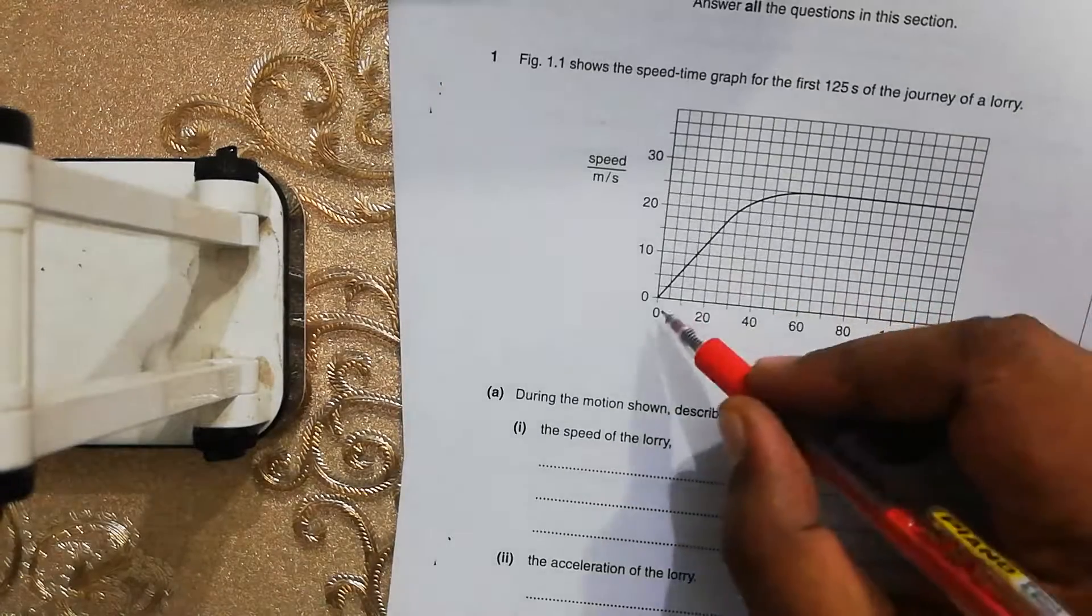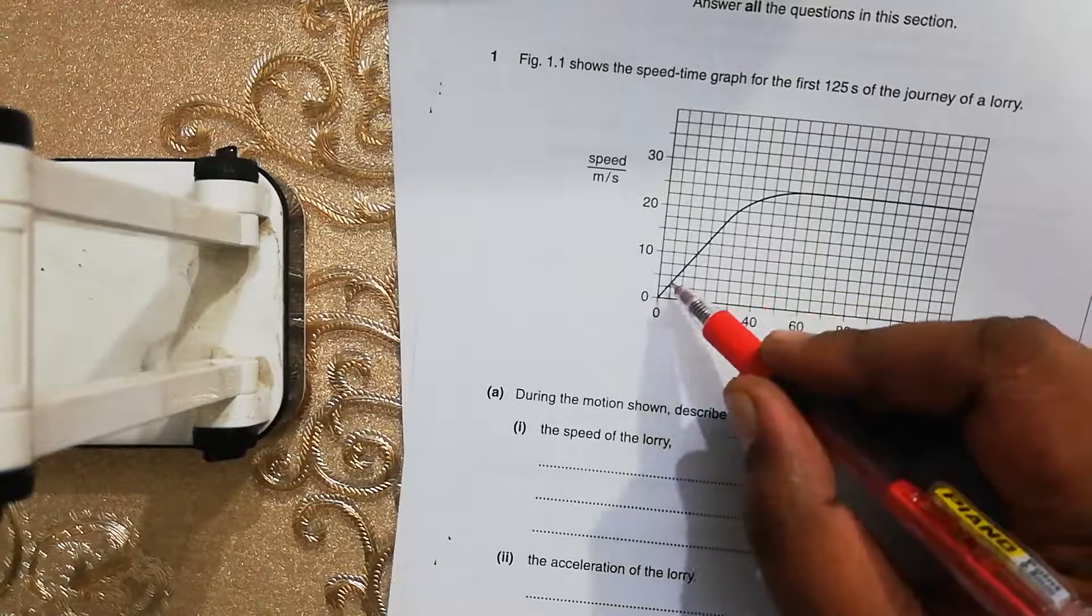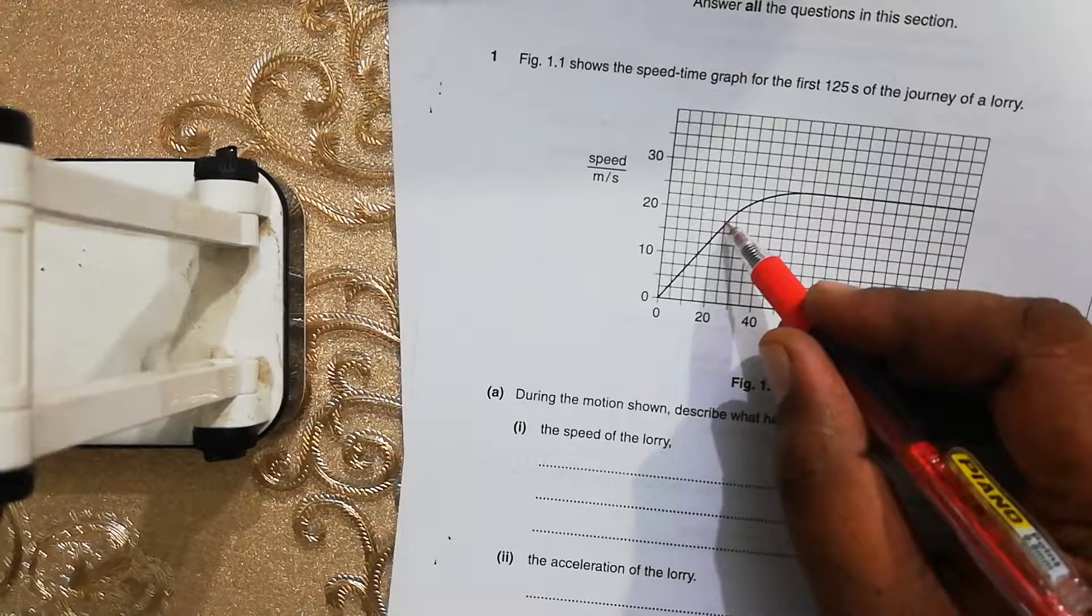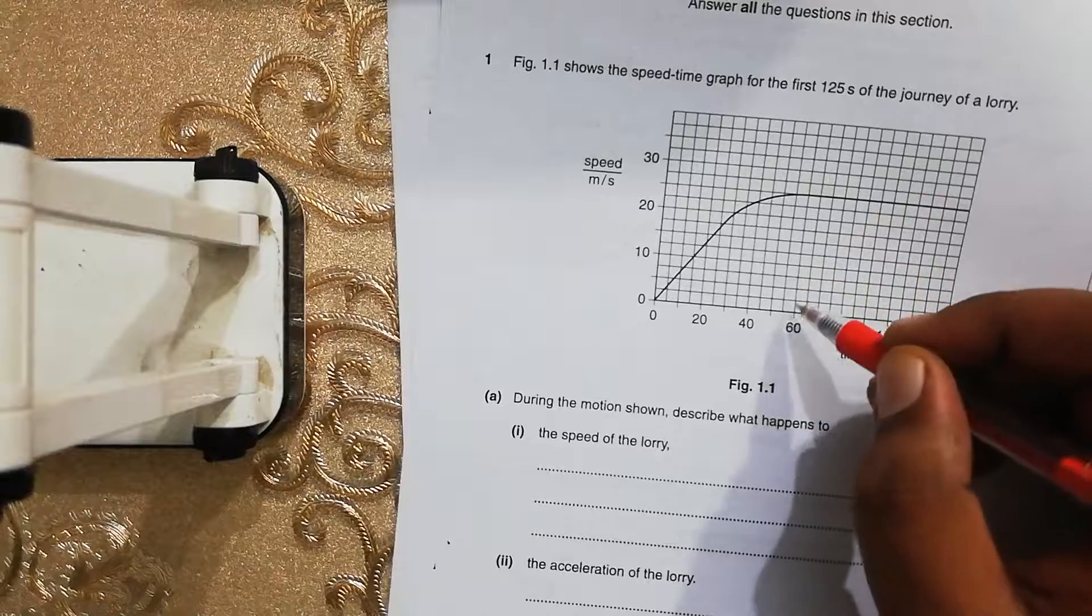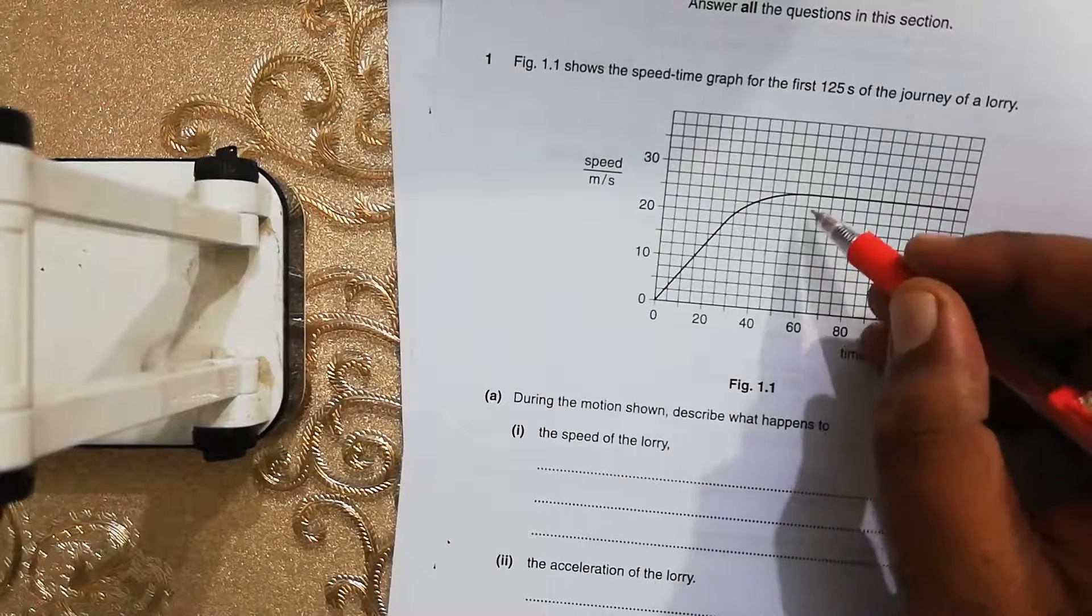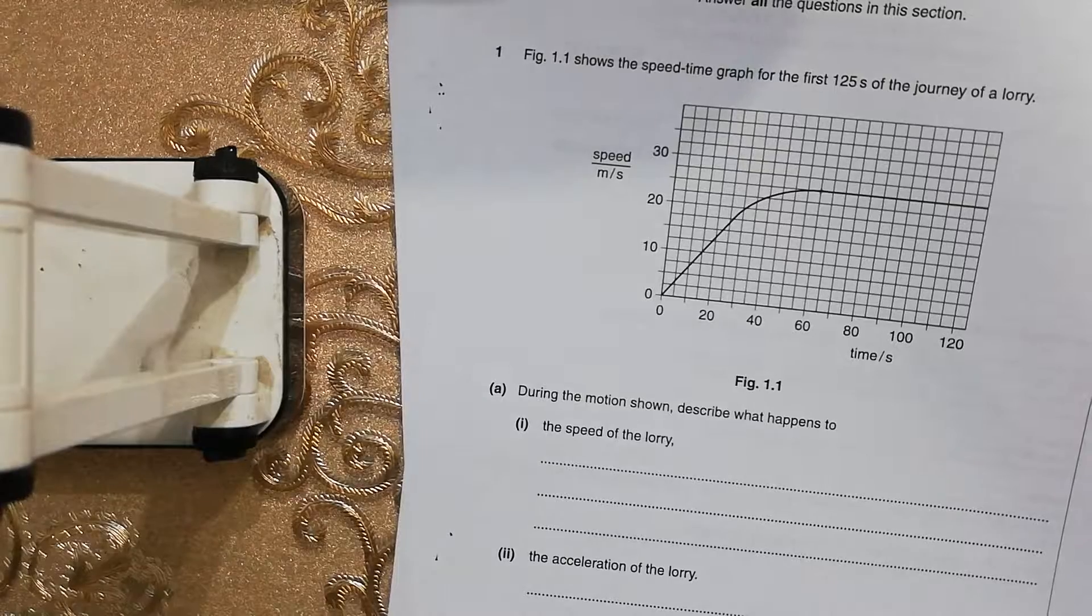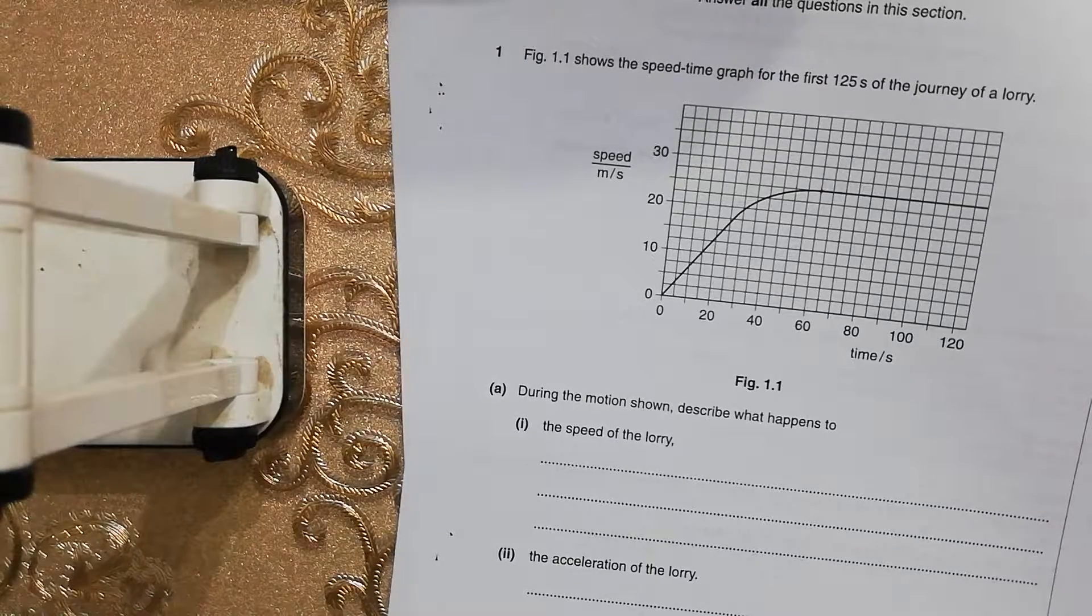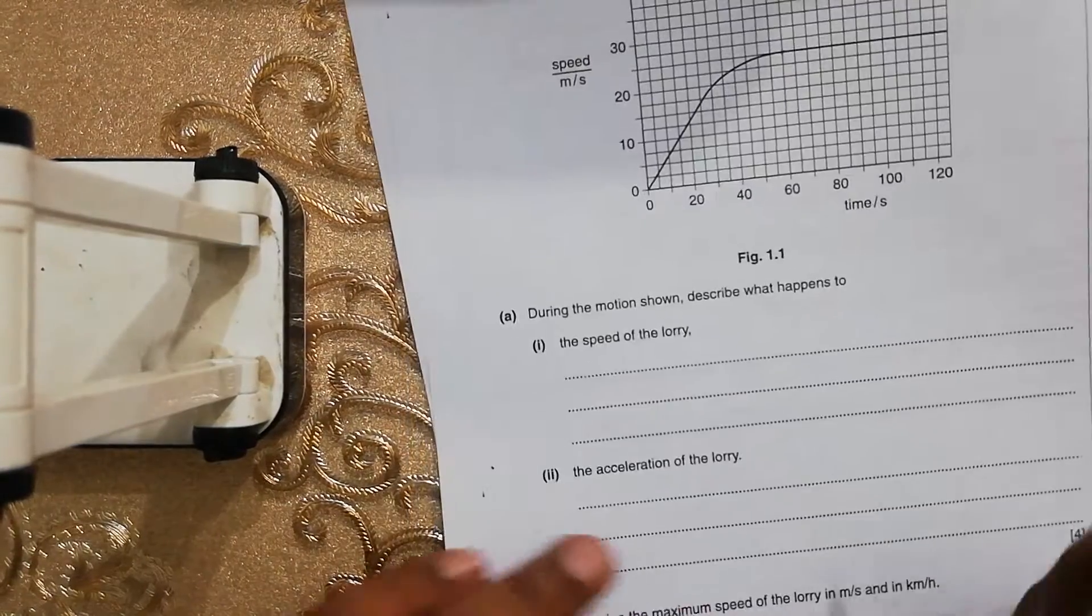As you can see, the speed of the lorry is gradually increasing. First of all the increase is uniform and then the increase is non-uniform, at the time approximately 60 seconds. After 60 seconds till 120 seconds the speed becomes constant. So there are three things that are happening with the speed.